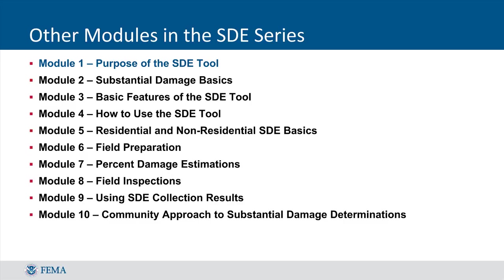After a disaster or other source causes damage to a structure, communities that participate in the National Flood Insurance Program, or NFIP, must carry out an evaluation of the property that has been impacted by the event in order to determine whether the property has been substantially damaged. This module is the first of ten that will cover a range of topics related to Substantial Damage Estimation.